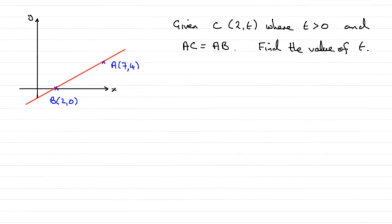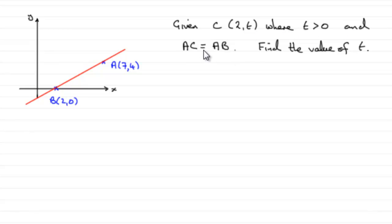We're told that C is a point with coordinates (2, T), where T is greater than 0, and the length AC is exactly the same as the length AB. We've got to find the value of T.